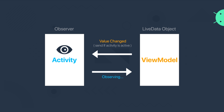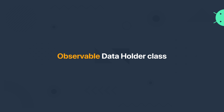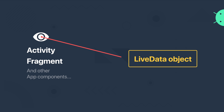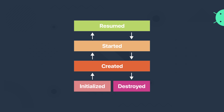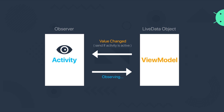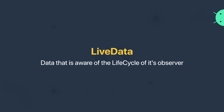Let's stop for a moment to think about this definition. What does it mean — observable data holder class? It means that LiveData can be observed by other components, for example UI controllers, which are essentially activities and fragments. LiveData is a lifecycle-aware component, meaning the LiveData object will send updates to our observer — an activity in this case — only if our activity is in an active state. If our activity is paused or destroyed, LiveData will not send updates; it will wait until our activity comes back to active state. That's the reason it's called LiveData — data that is aware of the lifecycle of its observer.